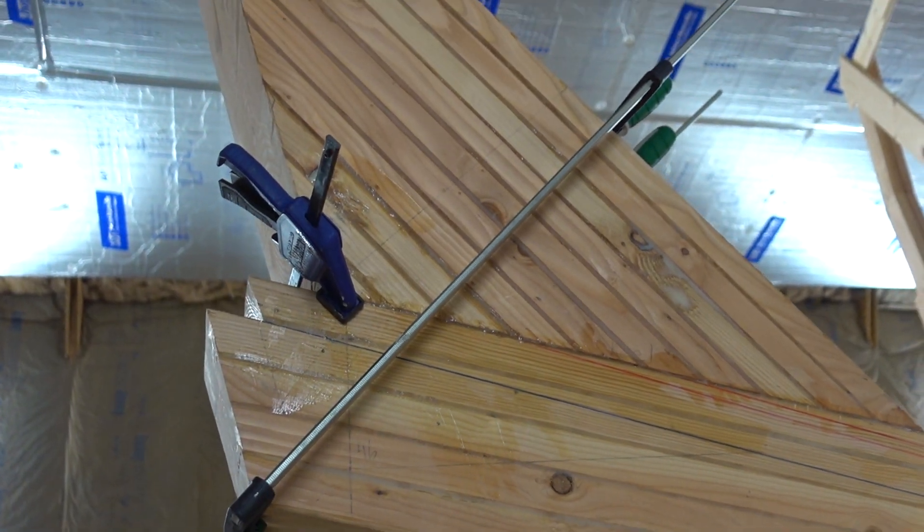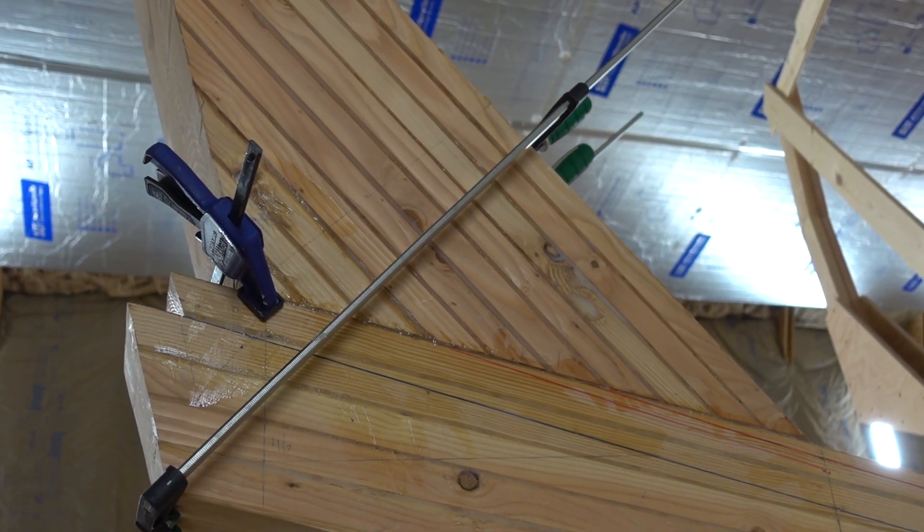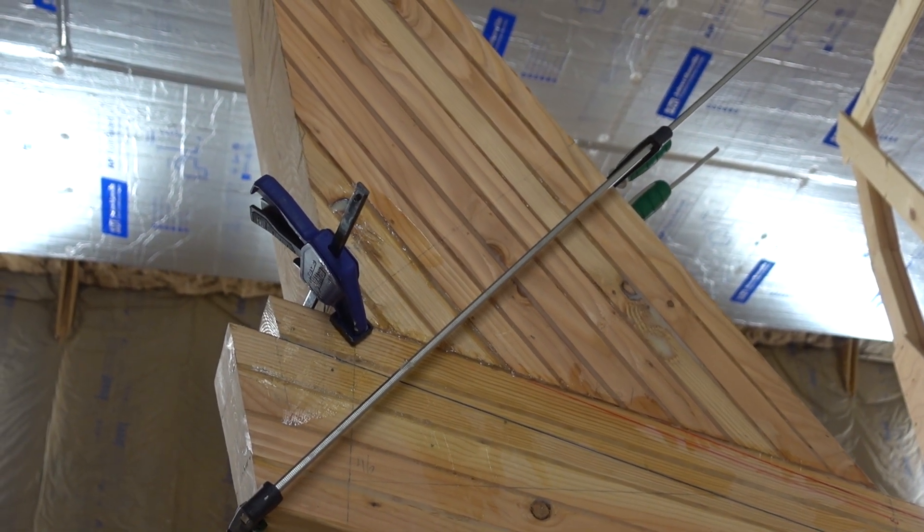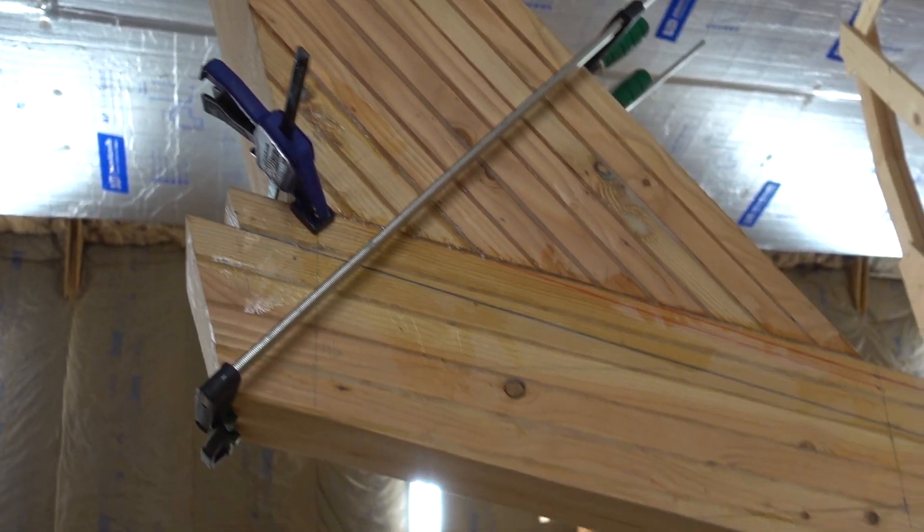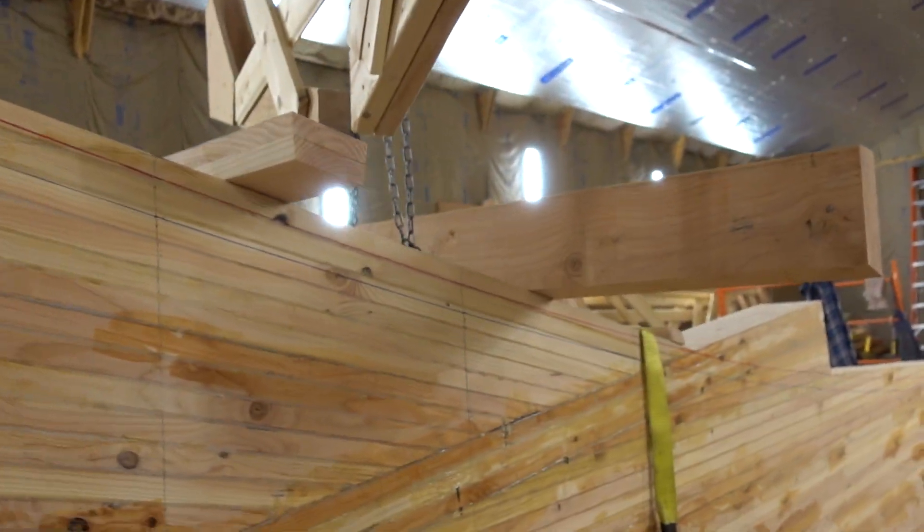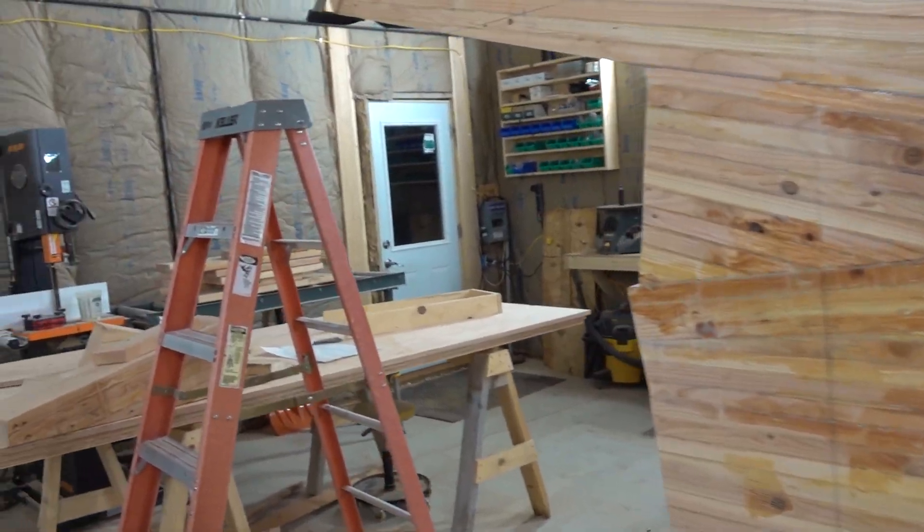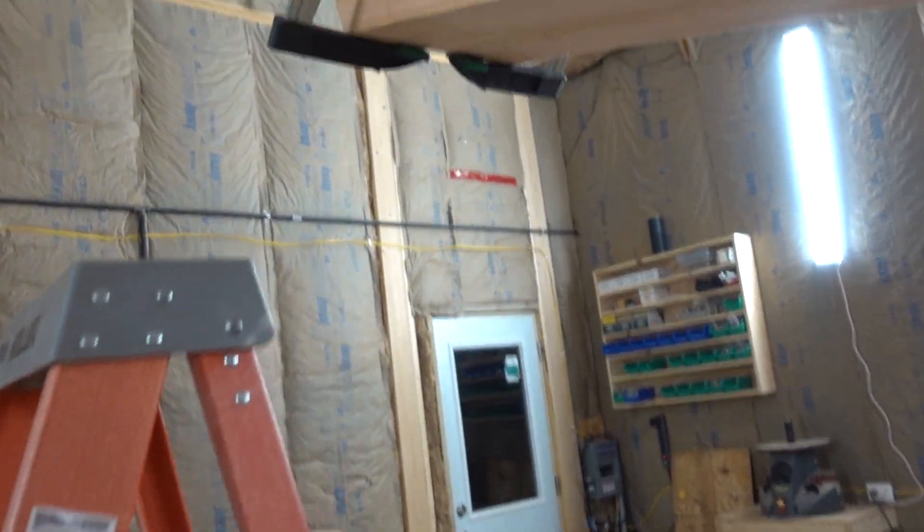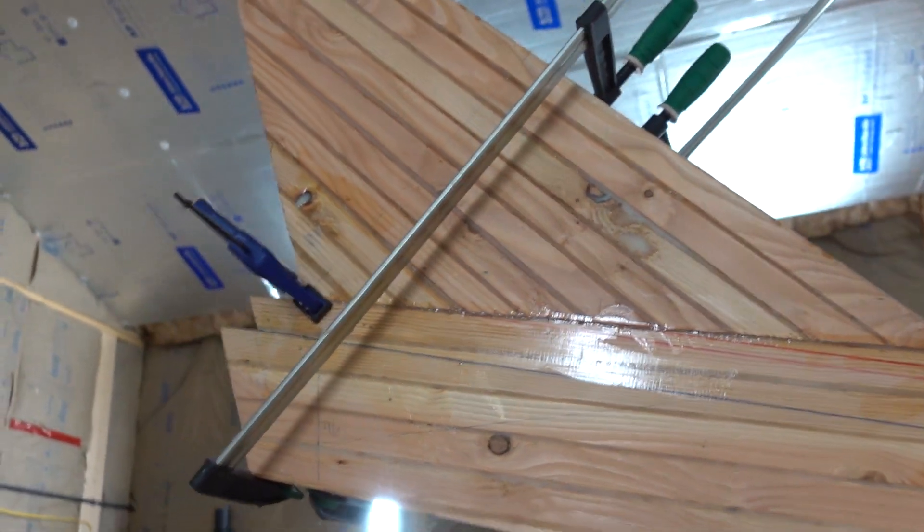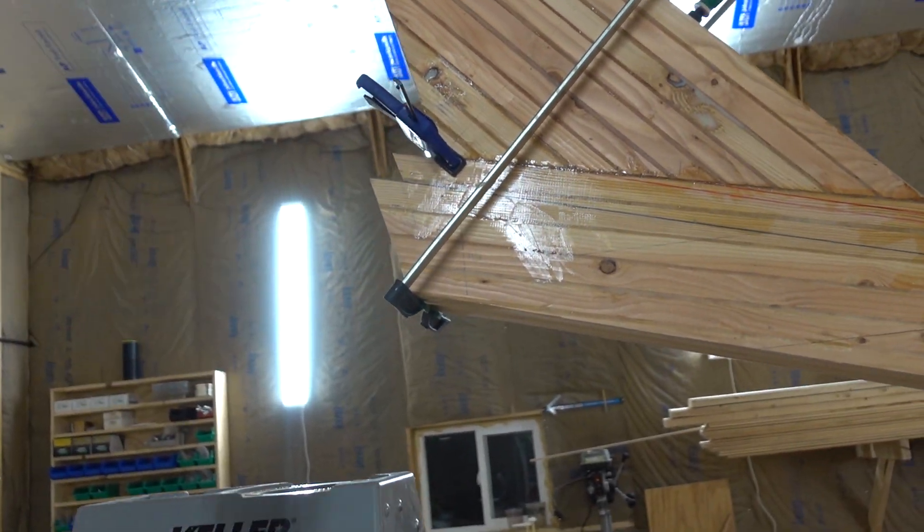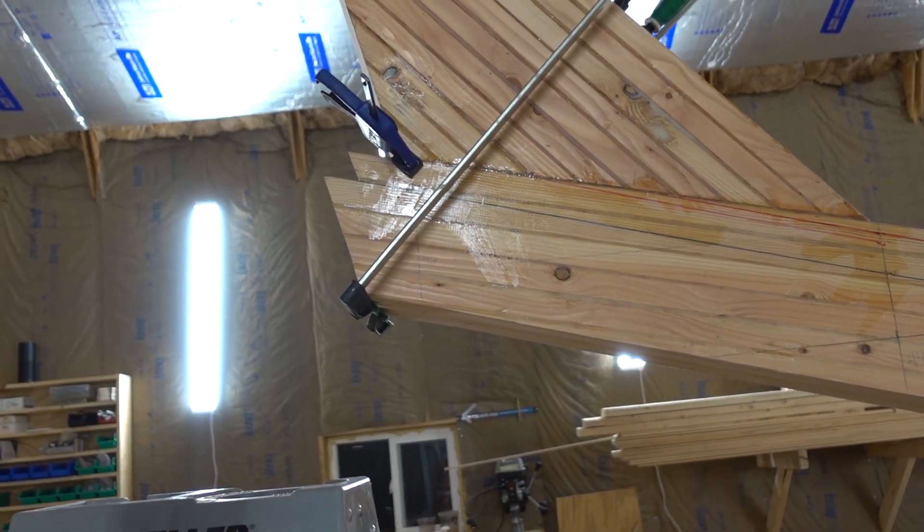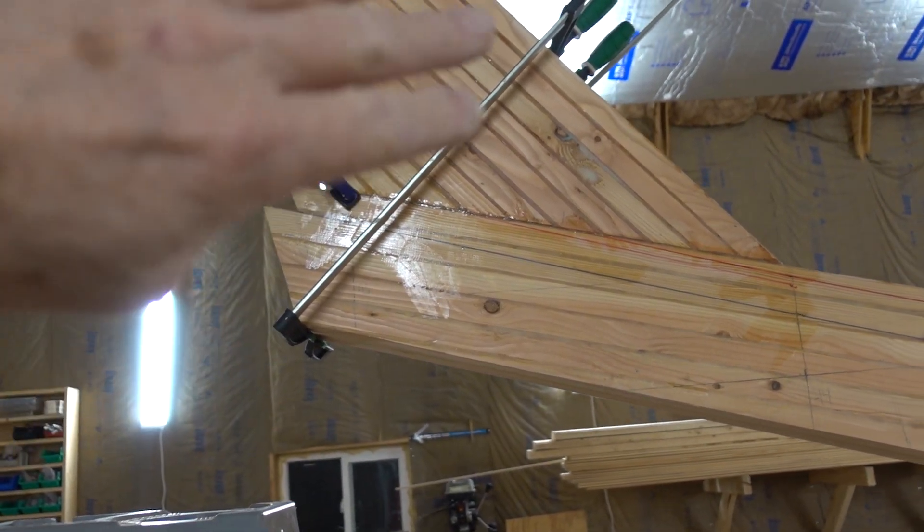Everything's pretty close, under a degree on my digital level, so I think that'll work okay. I made a jig to glue this knee up on here. I set it up on there and then I made a jig that comes out this way, just a couple boards, one on the end.